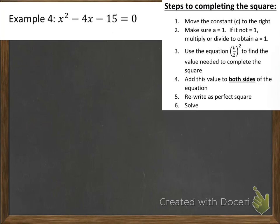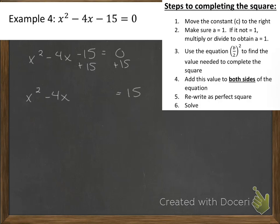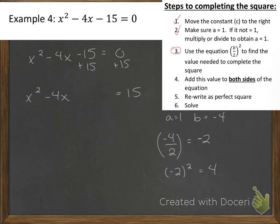Example 4: we have x squared minus 4x minus 15 equals 0. The first thing we want to do is move the constant to the right — so we add 15 to both sides, leaving a space to complete the square. In this case a is 1 and b is negative 4. Using the formula b over 2, quantity squared: negative 4 over 2 is negative 2, and negative 2 quantity squared is positive 4. So the number we need to add is plus 4 — and remember, we have to add 4 to both sides of the equation.